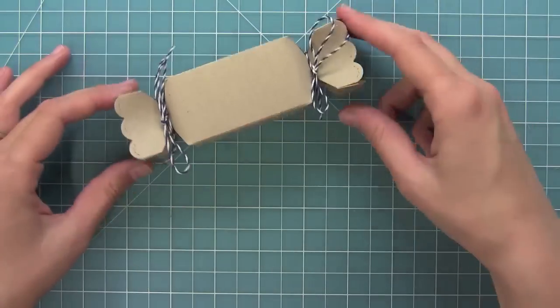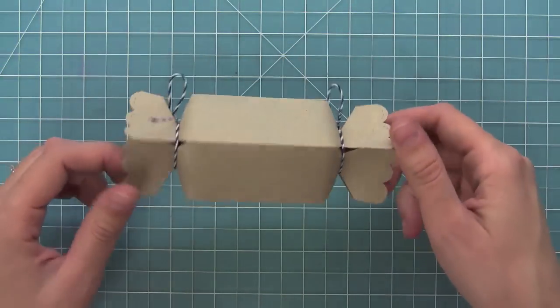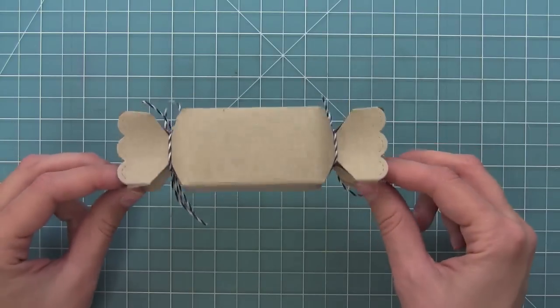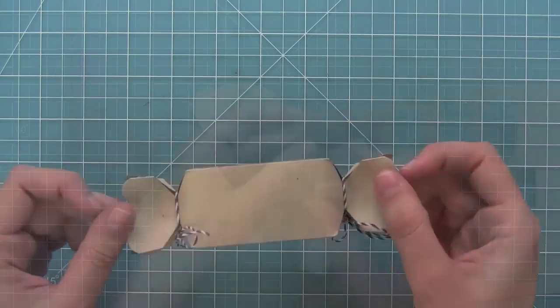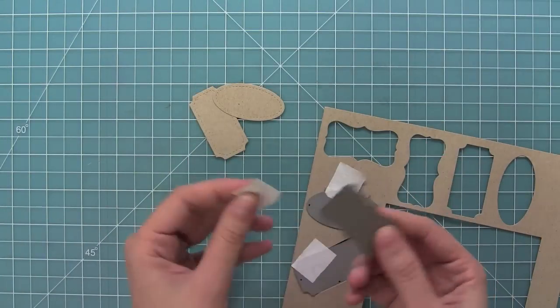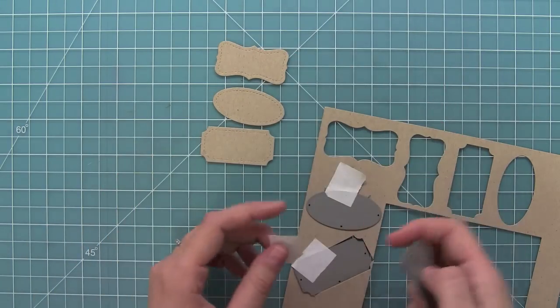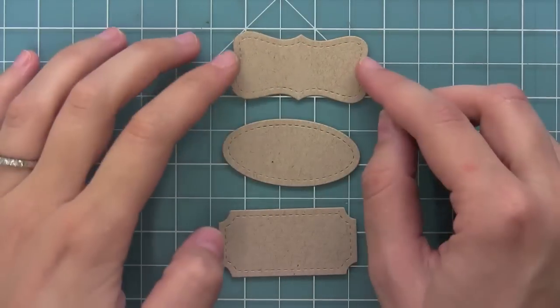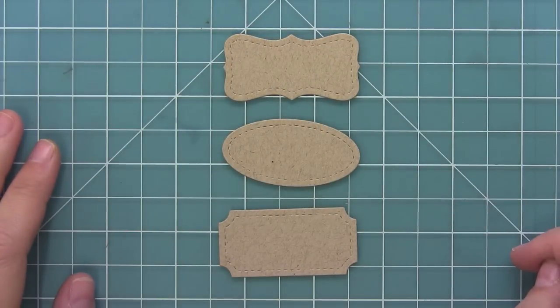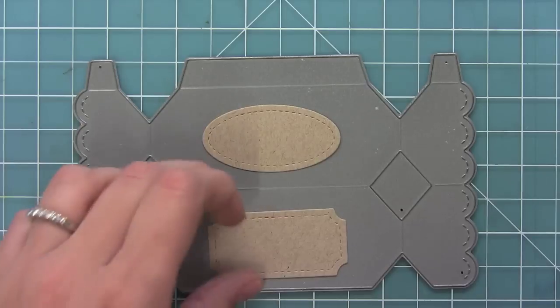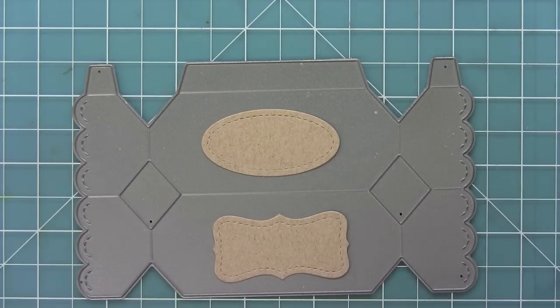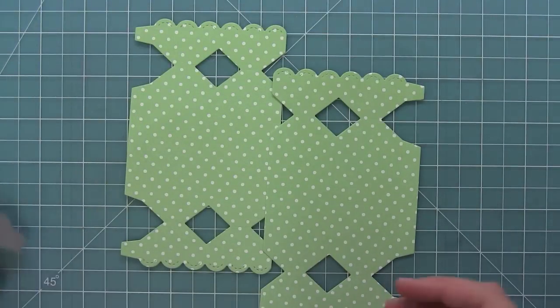Next I wanted to show you the stitched label dies. I love these dies—they've got great little detail and they're perfect for the candy box. You're going to see here I'm going to lay them on top of the die so you can see how perfectly they fit inside the box.